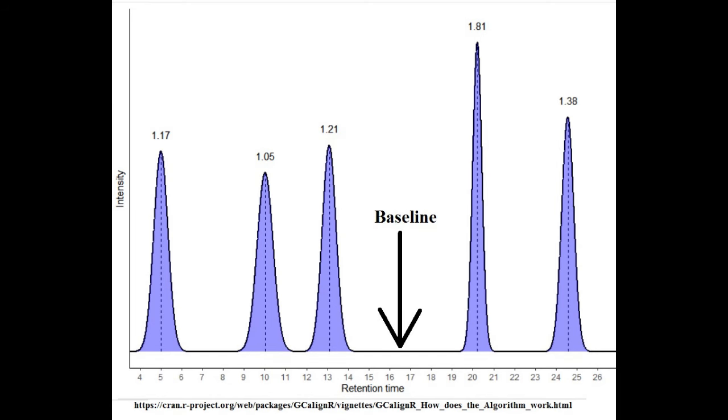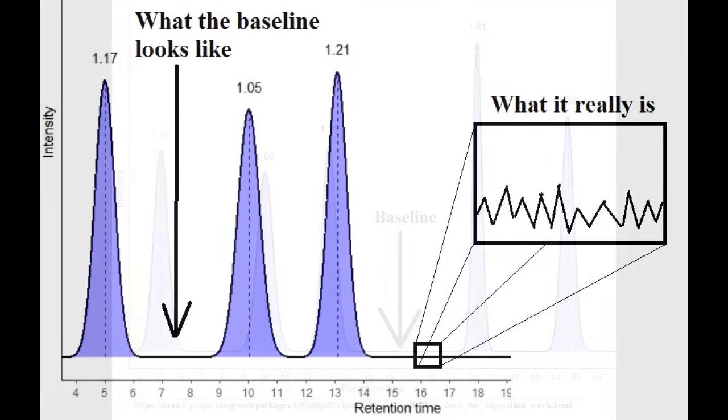Now, the baseline is the default signal that is received from the detector at all times, even though it looks like a flat line. If you zoom into it a lot, you will see that the baseline is actually composed of small signal variations, which produce a jagged line. The peak from an analyte must be very large compared to this baseline noise. In other words, it must have a high signal to noise ratio in order for the peak to be meaningful.